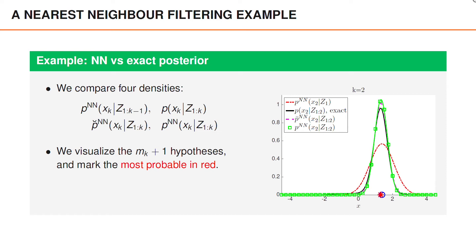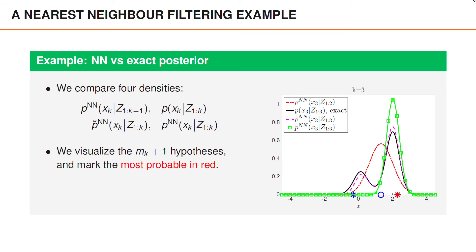At time 2, the most likely hypothesis is that the measurement at 1.3 is an object measurement, and here the nearest neighbor approximates the true posterior very well. At time 3, we again have two measurements, and both appear to be reasonable object measurements. The true posterior is therefore bimodal, whereas the nearest neighbor algorithm approximates it as unimodal, by pretending that we know that the measurement at 2.3 is an object measurement.